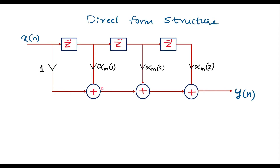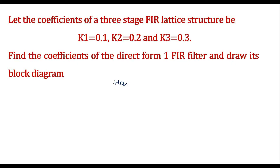The direct form structure has input x(n) and output y(n). The direct form coefficients are alpha_m(1), alpha_m(2), and alpha_m(3), and we are supposed to calculate these. In this example, the order of the filter is m = 3, so we need to calculate alpha_3(1), alpha_3(2), and alpha_3(3), which are known as direct form coefficients.